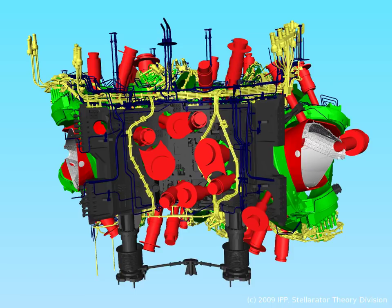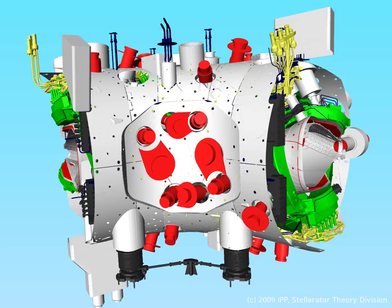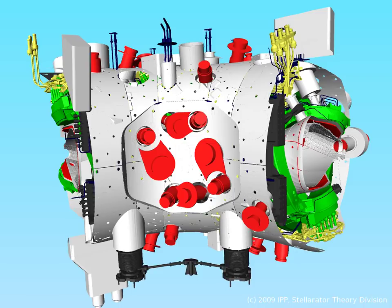All components now disappear beneath layers of thermal insulation used to ensure the coil system remains at the frigid temperatures necessary for superconductors, and the entire construction is then enclosed within the so-called cryostat. Now the complicated structures hidden within can only be guessed at.